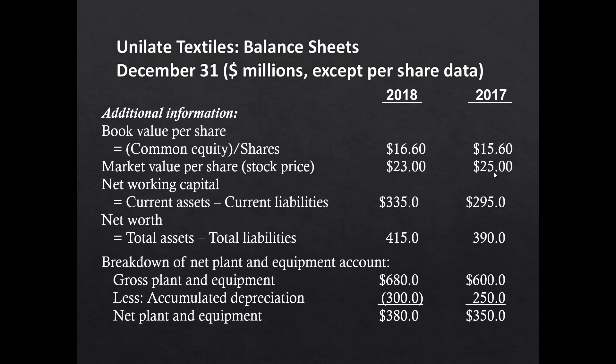Even though book value went up by $1 per share, market price went down by $2 per share. As a financial analyst, you should immediately ask: if the company made money and book value increased, why did market price decline? This is a key finance concept — the stock price reflects the expected future value of the business, and the market is suggesting that future value declined from 2017 to 2018.